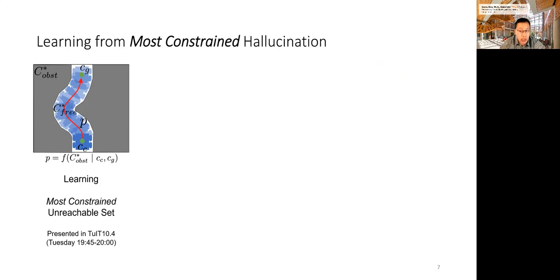To address this problem, prior work proposes to hallucinate one special unreachable set, called the most constrained unreachable set, C-obstacle star. The idea is to find the unique, maximum, or we call most constrained obstacle set, which makes the motion plan executed in open space optimal. We presented this approach in a Tuesday session. Feel free to check out that paper as well.